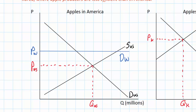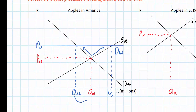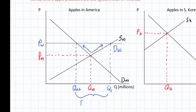As the price rises from P.US to P.W., the quantity demanded among American consumers correspondingly decreases — I'll label this Q.US for quantity demanded. However, due to the higher price, American apple growers will increase the quantity of apples they produce and sell the surplus to the rest of the world. At P.W., the quantity supplied by American growers — also labeled Q.US — exceeds the quantity demanded by American consumers. This is not a disequilibrium; rather, that excess supply of apples will be exported to the rest of the world.